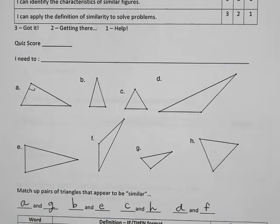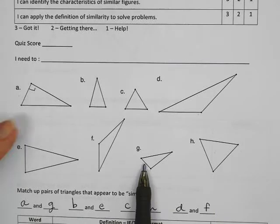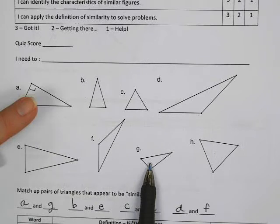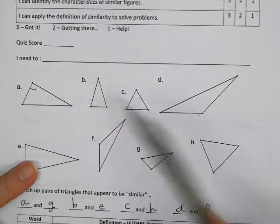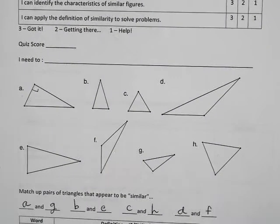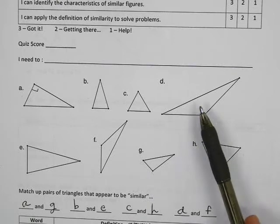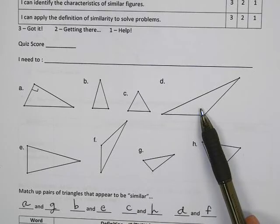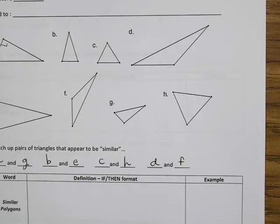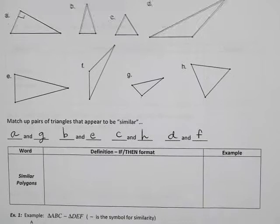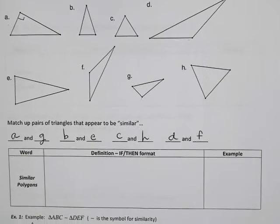I hope when you look at these, you make some connections to that very first section we did on dilations. Dilations, remember, are enlargements or reductions, and that's really what you should see by looking at this pair right here. G is a reduction of A. Here you could say E is an enlargement of B. H is an enlargement of C. And F is a reduction of G. So dilations produce for us this idea of similar figures. Let's write a definition down here in the box.